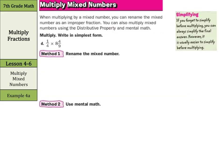Now multiplying mixed numbers. When multiplying a mixed number, you can rename it as an improper fraction. You can also multiply mixed numbers using the distributive property and mental math. Note: if you forget to simplify before multiplying, you can always simplify the final answer — however, it is usually easier to simplify before multiplying, especially as we get into mixed numbers and convert those to improper fractions.